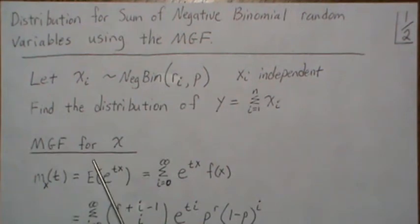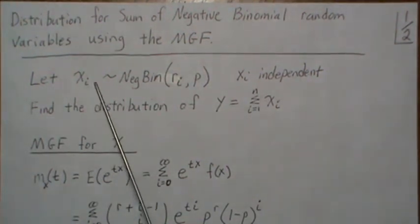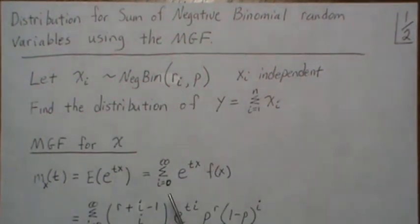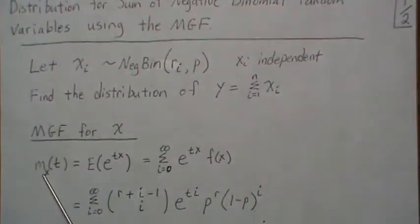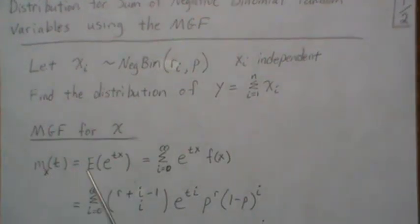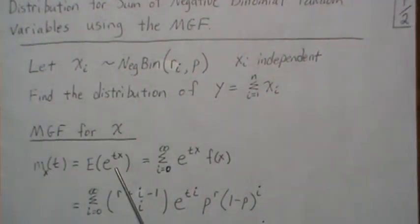The moment generating function for X, and we're going to drop the i for this development, is the expected value of e^(tX) which says stick in e^(tX) times the probability mass function summed over all possible values for the negative binomial. For more details on a negative binomial I have several videos, so if you just search that term you should find them.